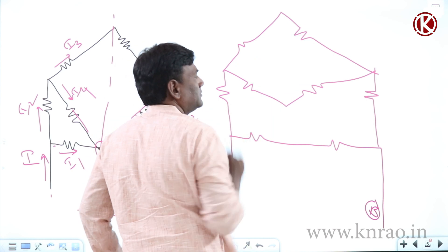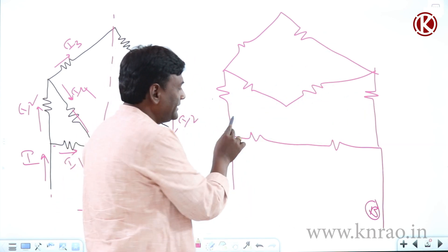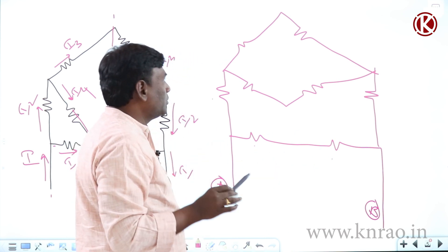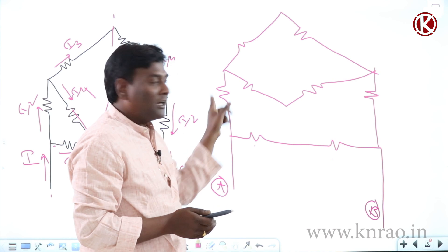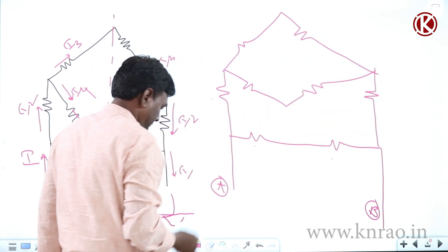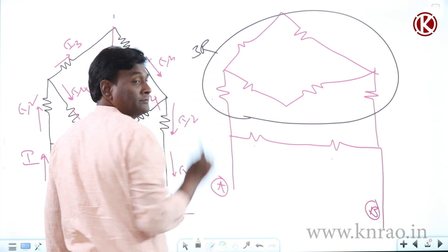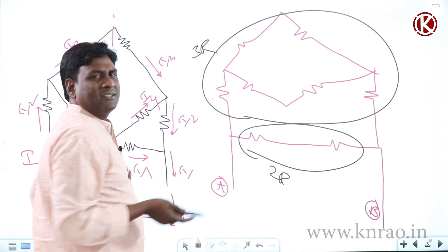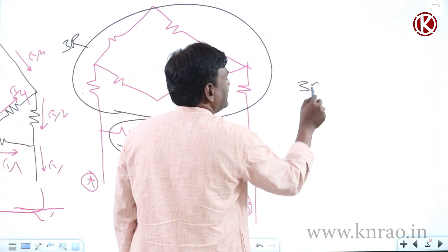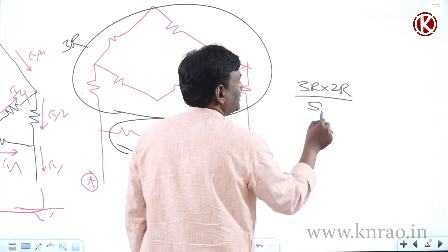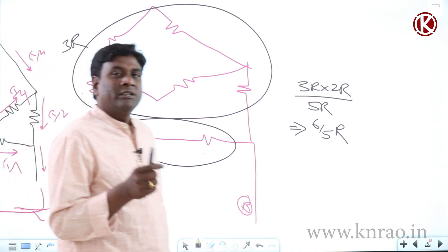Now, R in parallel with R equals R/2. The equivalent of R parallel R is R/2. With R and R in series, we get the total resistance. From here to here it is 3R, and from here to here it is 2R. Now 2R and 3R are connected in parallel: 3R × 2R divided by (3R + 2R) = 6R / 5R = 6/5 R. So the equivalent resistance is 6R/5. Problem solved.